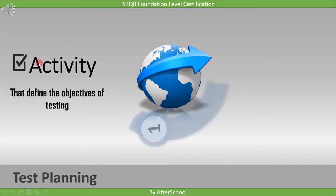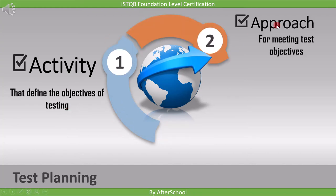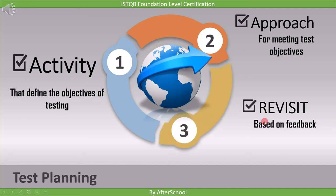Test planning involves activities that define the objectives of testing. It is the stage where we decide what we need to test and what we want to achieve from it. It also includes the approach for meeting test objectives within constraints imposed by the context. Test plans may be revisited based on feedback from monitoring and control activities.